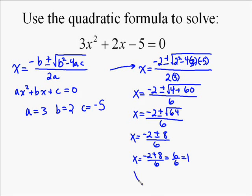And then the other one is going to be negative 2 minus 8 over 6. That gives you negative 10 over 6, which you always simplify. Negative 10 over 6 simplifies to negative 5 over 3.